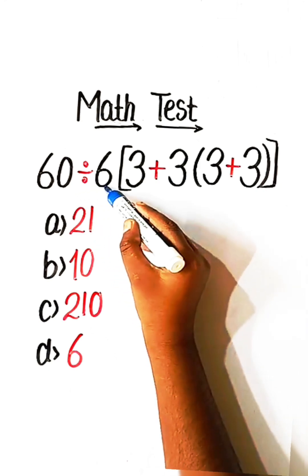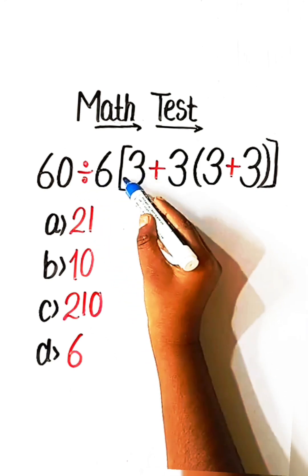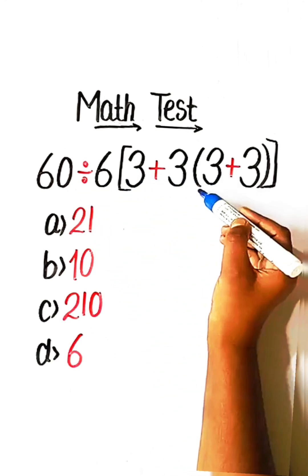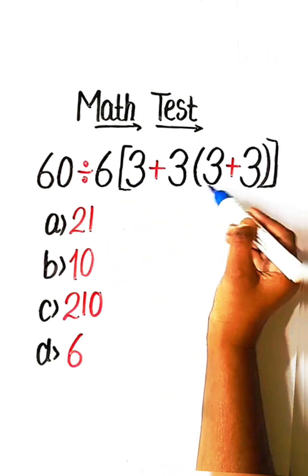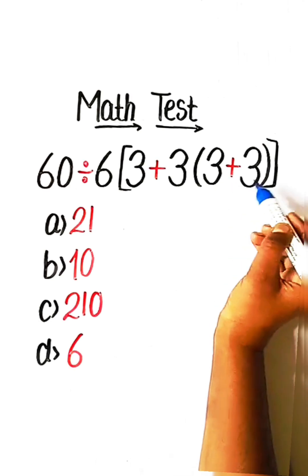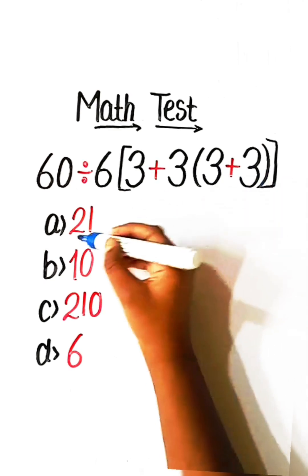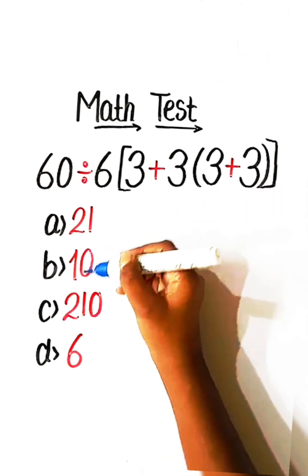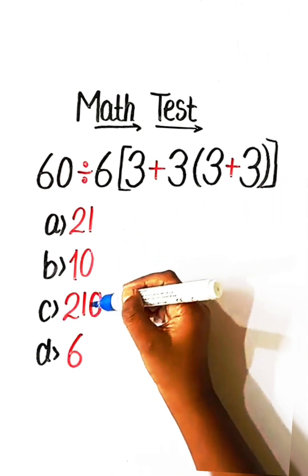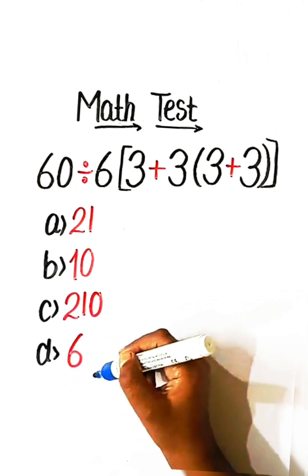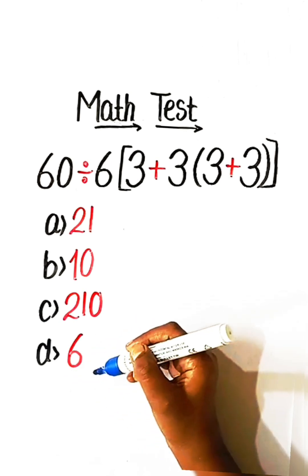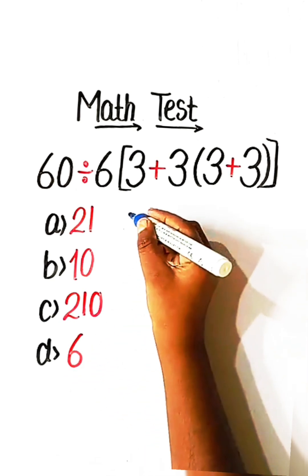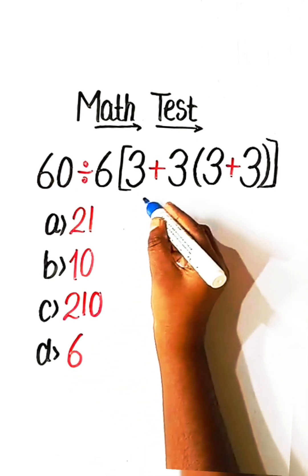60 divided by 6, under bracket 3 plus 3, under bracket 3 plus 3, equals to what? Options: 21, 10, 210, and 6. So, let's solve this.